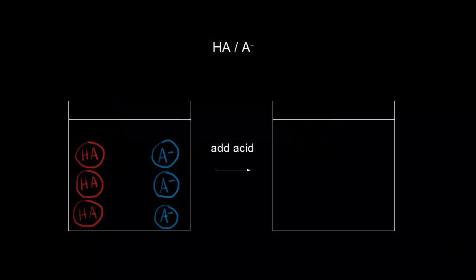Buffer solutions resist changes in pH. Let's think about a solution of a weak acid and its conjugate base. Here we have HA, which is our generic weak acid, and the conjugate base would be A minus. A buffer solution needs to have substantial amounts of both present. We have a beaker that has, in this case, equal amounts of HA and A minus.